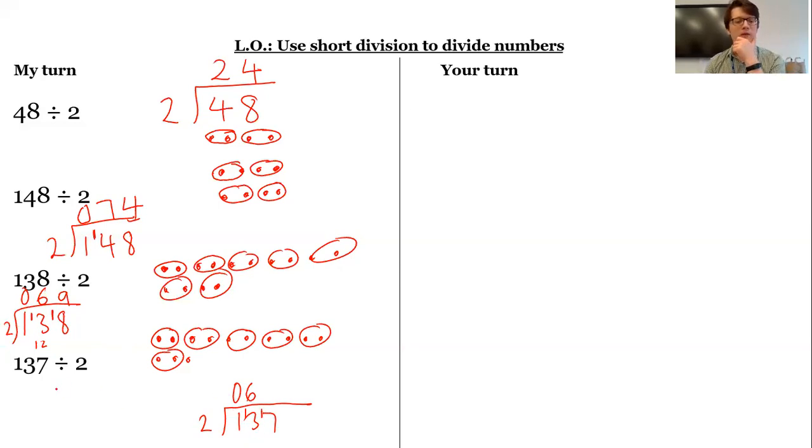Now, if we draw our dots again, three, four, five, six, seven, eight, nine, 10, 11, 12, 13, 14, 15, 16, 17. Let's count in twos. There's one, two, three, four, five, six, seven, eight lots of twos, which is 16.